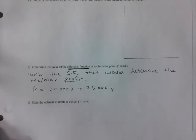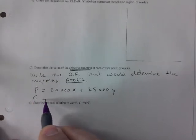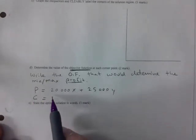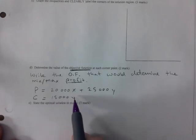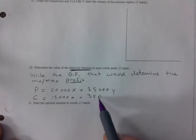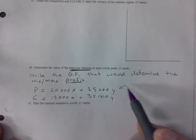What if they had asked you to write the objective function that would determine the cost, the maximum or minimum cost? What would that look like? Cost, and then you go back up. It costs you $15,000 for every basic and $35,000 for every deluxe.